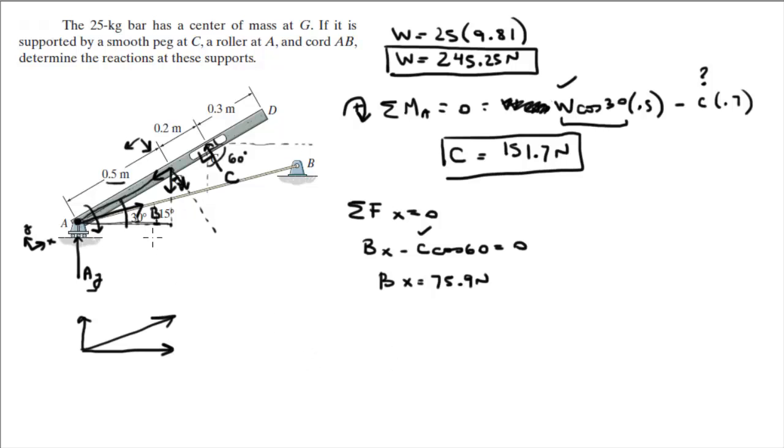But, you have the angle that it forms. You have this angle, 15 degrees, and you have B_X, which is found. So, if you wanted to find B, you know that B times the cosine of 15 degrees is equal to B_X. We have B_X, so you just solve for B, is equal to B_X divided by the cosine of 15. So, B is equal to 78.5 newtons.